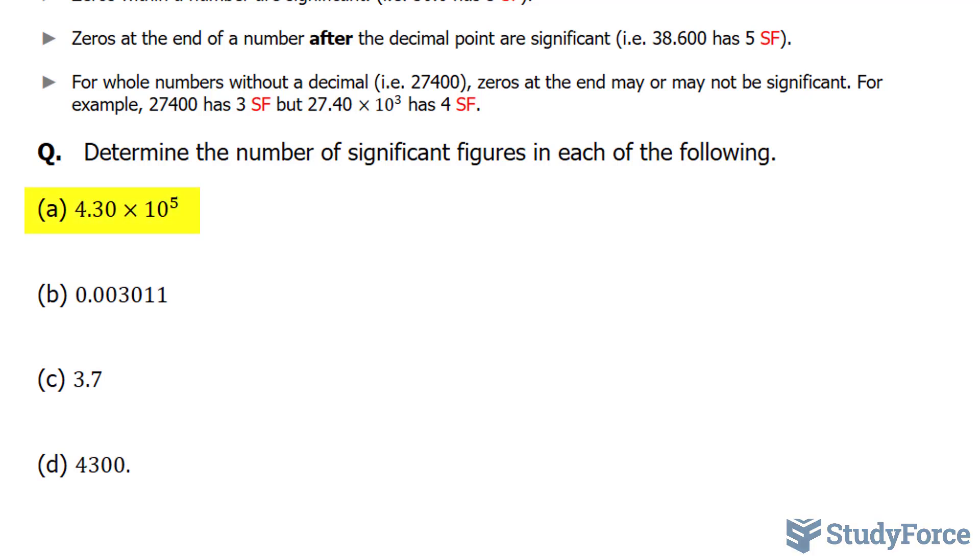Starting with a, this number has three significant figures, and if we were to expand this number into its standard form, it would equal to 430,000. Now because 4.30 had a decimal in between the 4 and the 3, it has three significant figures.